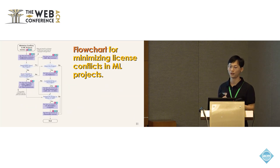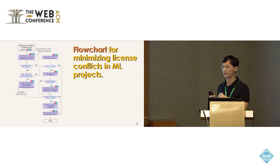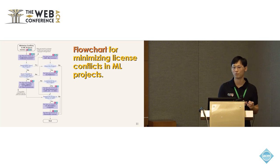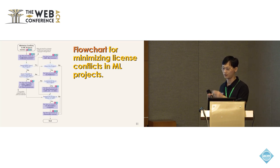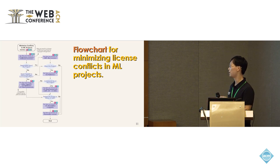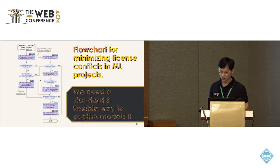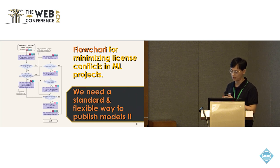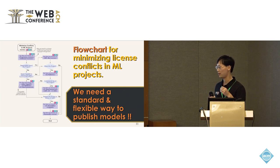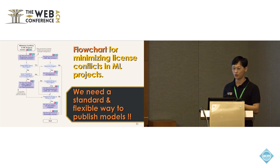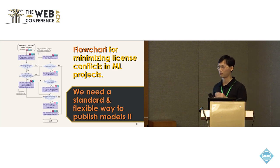In our paper, we studied five scenarios and have many findings about license conflicts in machine learning projects. We also use this tool to help developers minimize license conflicts. However, we also recognize we need a new way to publish a model, because current model licenses such as OpenRAIL are not very flexible and do not support many options.